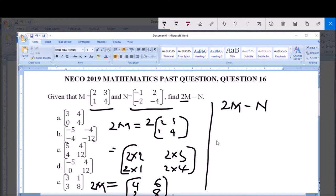Now, we have 2M minus N. And our 2M is equal to 4, 2, 6, 8 minus N. And N is minus 1, minus 2, 2,